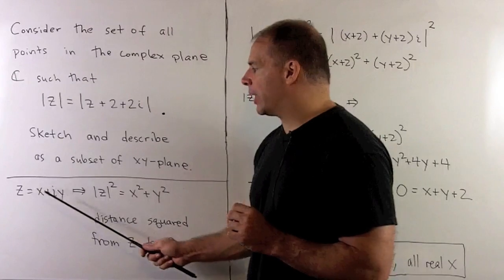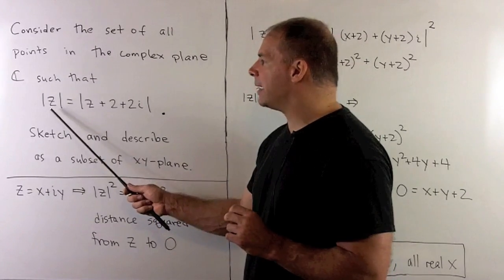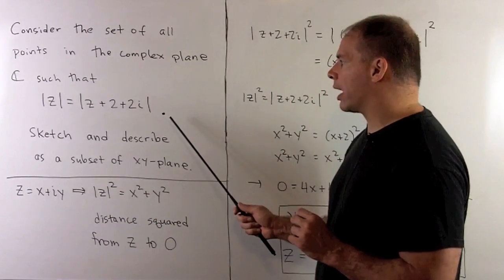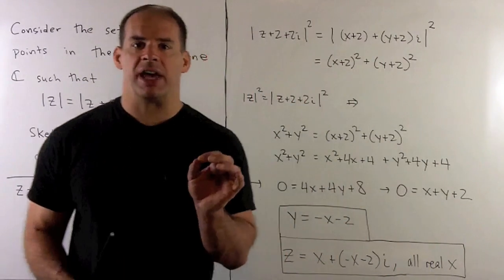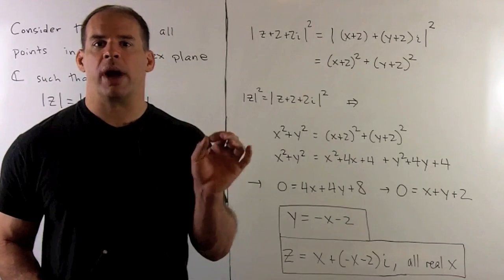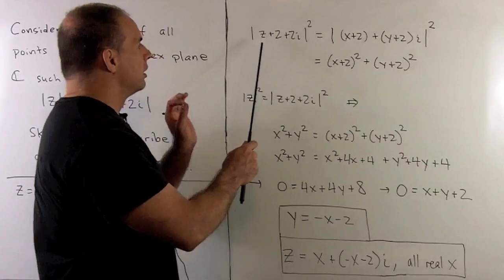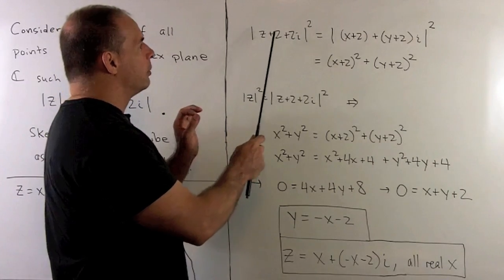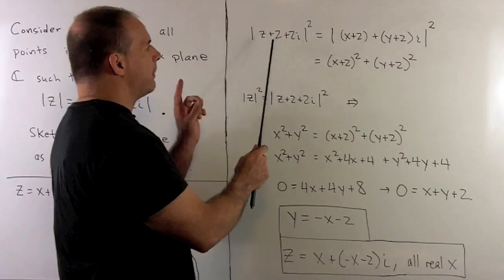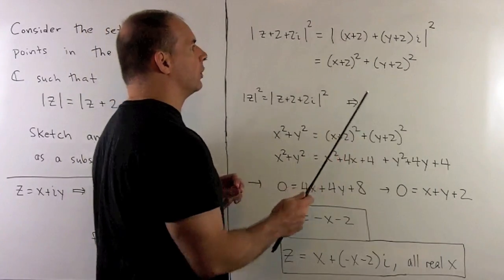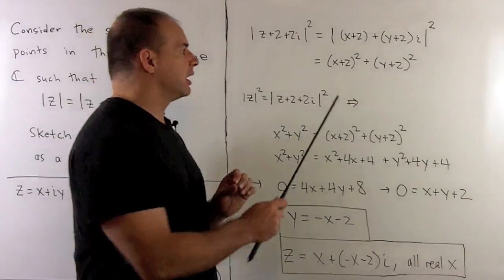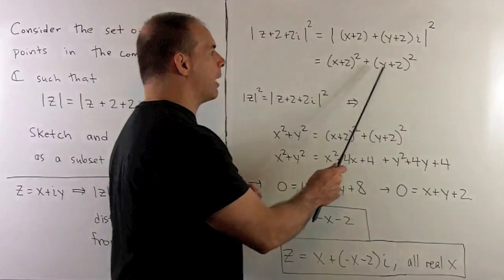Now, if I let z be equal to x plus iy, we have the equation for this side, we're going to square it. Our recipe says separate into the real and imaginary parts, take the squares and then sum. So we have x + iy + 2 + 2i. The real part is going to be x + 2, the imaginary part is going to be y + 2. So I take the sum of the squares, gives me (x+2)² + (y+2)².